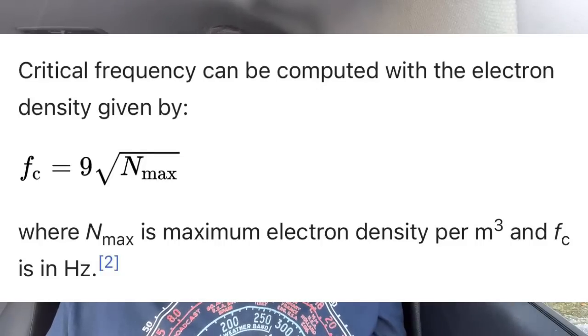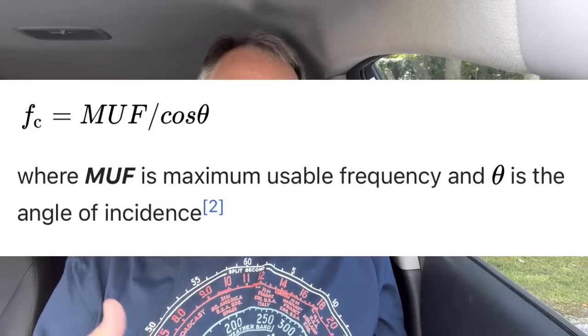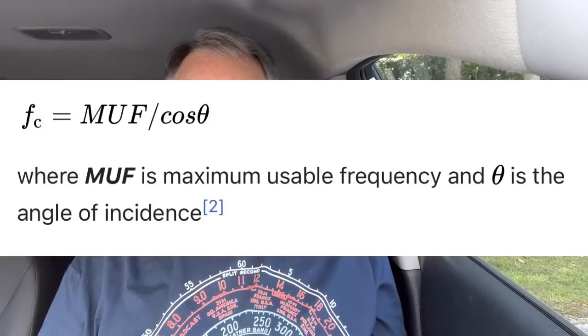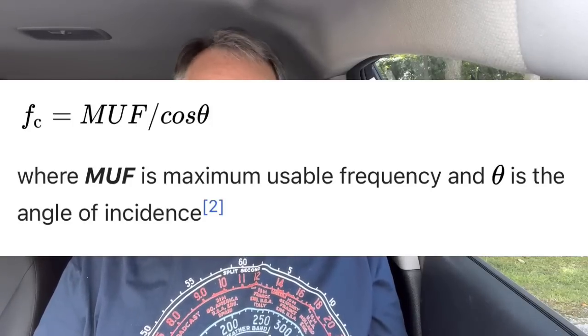There's an equation for finding what's called critical frequency. Critical frequency is basically what you get going straight up and straight down. If you sent a signal straight up in the air and kept raising the frequency, when you got to the point where it went through the ionosphere and didn't come back, that point is the critical frequency. You need to know that because that's how you find MUF.